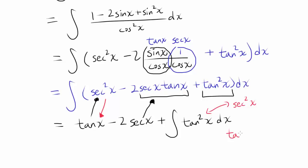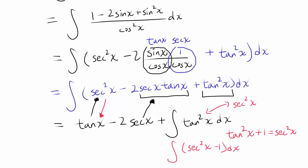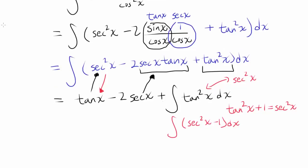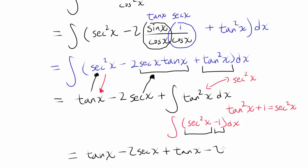We can write tangent squared of x in terms of secant squared of x using the Pythagorean identity: tangent squared of x plus 1 equals secant squared of x. So tangent squared of x equals secant squared of x minus 1. Integrating that is pretty easy: integrating secant squared gives tangent of x, and integrating minus 1 gives minus x.